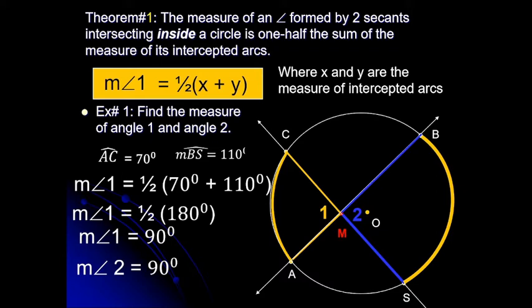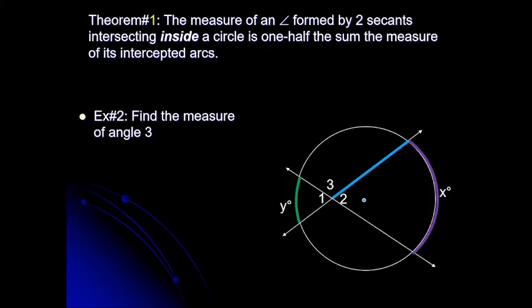In Example 1, the intercepted arc of angle 1 is arc AC, and the intercepted arc of angle 2 is arc BS. Their measures are 70 degrees and 100 degrees respectively. Getting the sum gives 170 degrees — wait, that is 170 degrees — then multiply by one-half, so 170 divided by 2 gives 85 degrees... actually the sum is 180 degrees divided by 2, so the measure of angle 1 is 90 degrees. The measure of angle 2 is also 90 degrees because vertical angles are congruent.